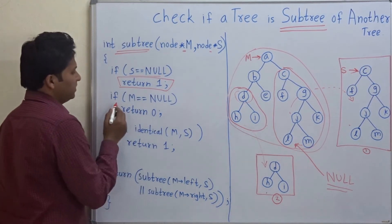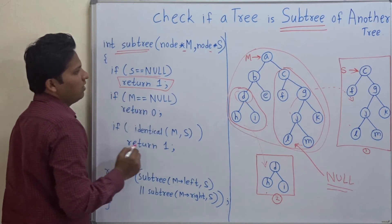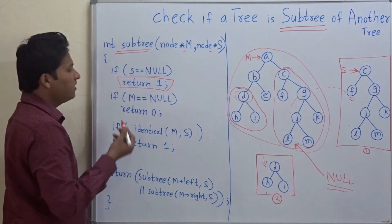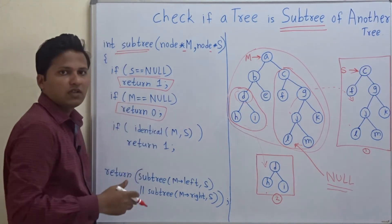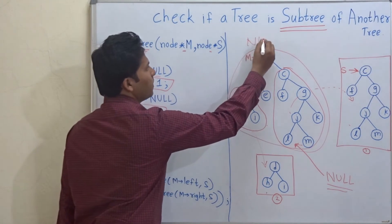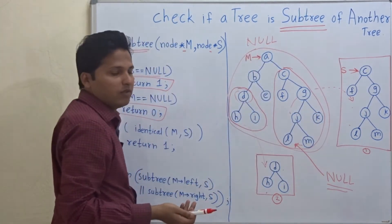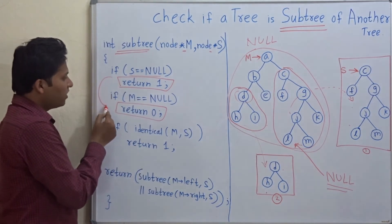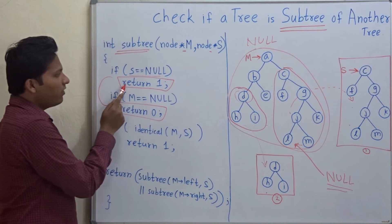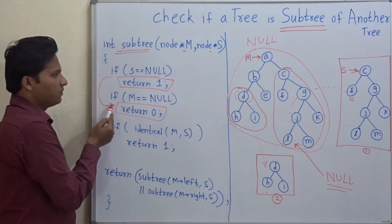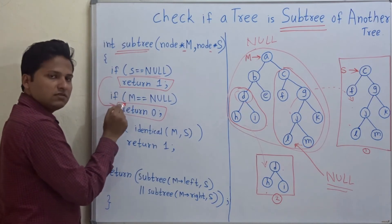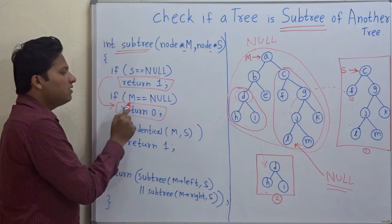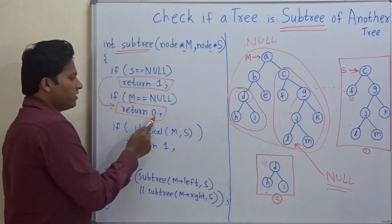Then the next condition is if M equals null, meaning if the main tree is null but the subtree is not null. In that case, obviously we return 0, because if our main tree is null, how can this tree be a subtree? Understand that the subtree is not null because we have reached here — if the subtree was null, we would have returned already. So as the subtree is present but the main tree is null, we return 0.